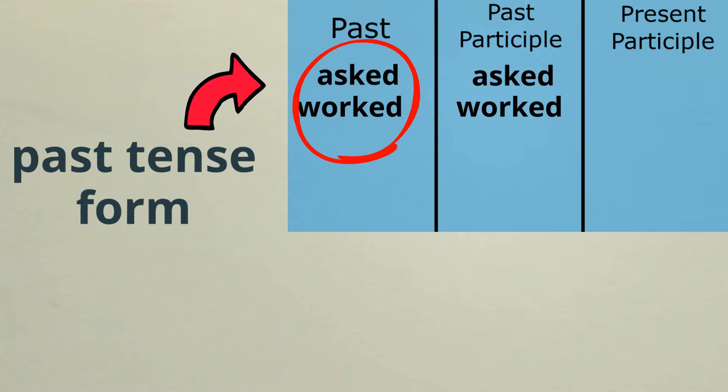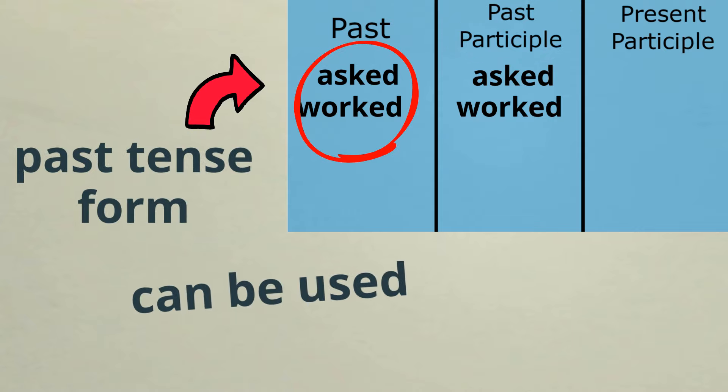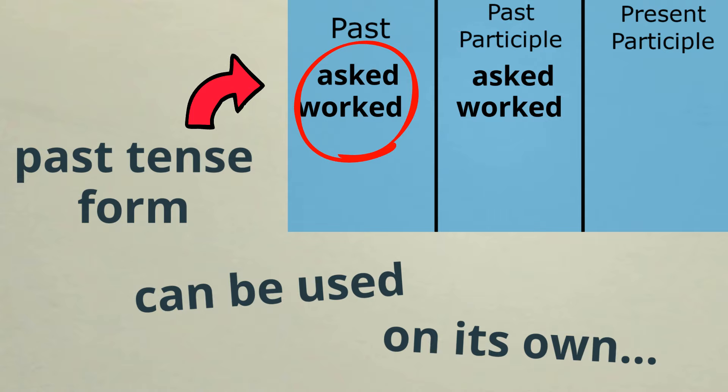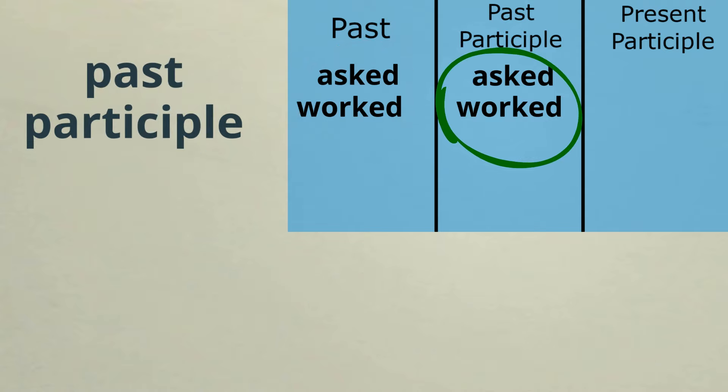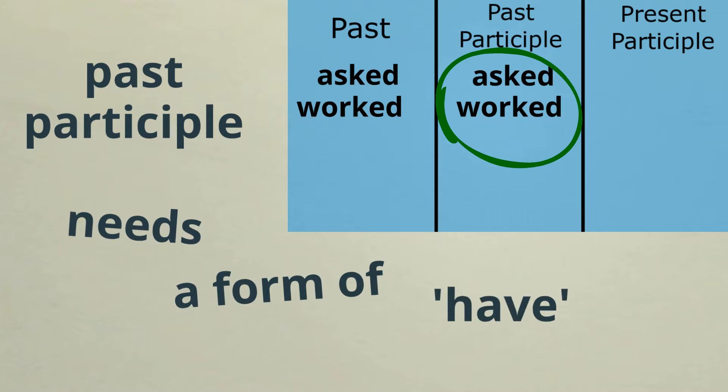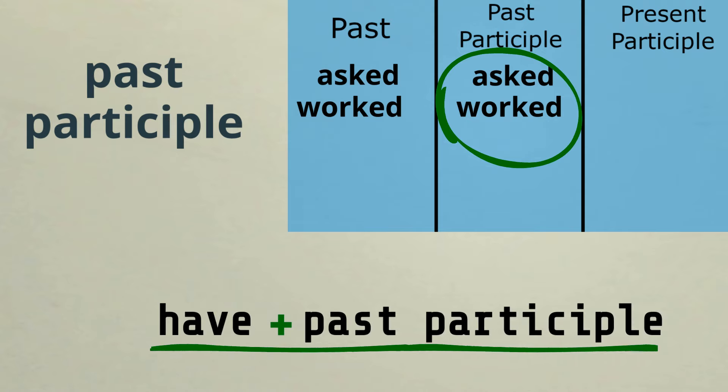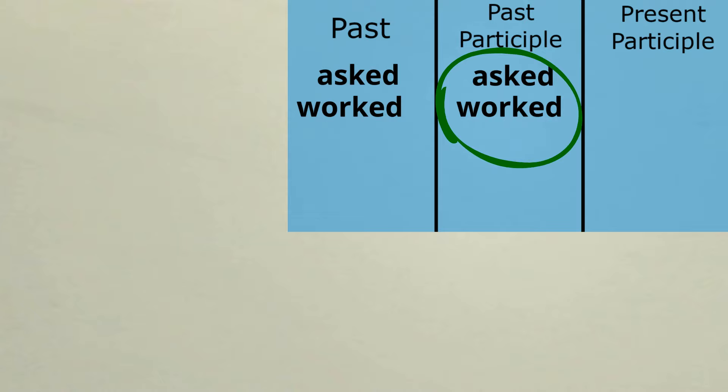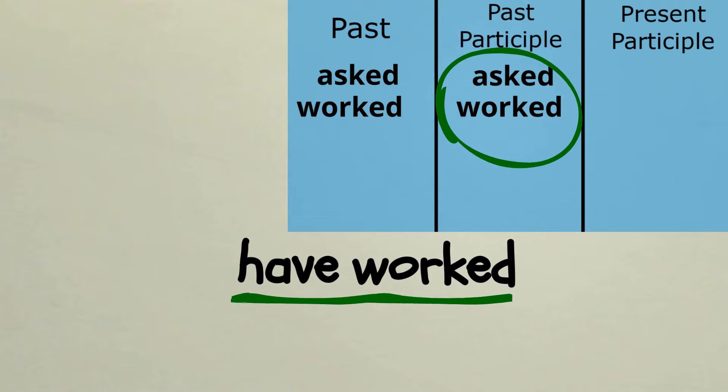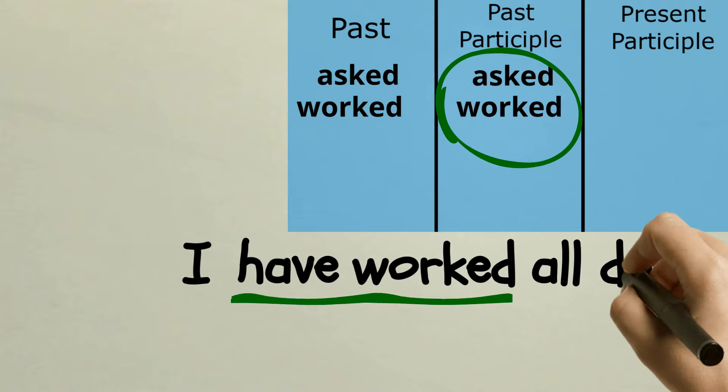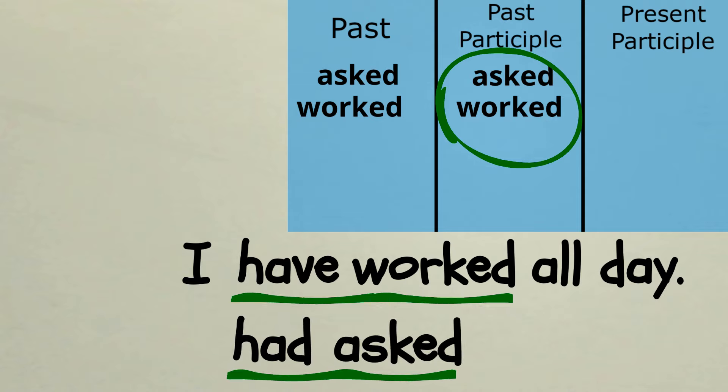While the past tense form of a verb can be used on its own to send an action to the past, a past participle needs something else. It needs a form of the auxiliary verb have. For example, have worked: I have worked all day. Had asked: I had asked my friend.